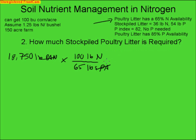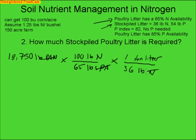That leaves us with the total amount of pounds of nitrogen we are going to need. We then multiply that by the ratio of pounds of N in the total amount of stockpiled litter — for every 1 ton of litter, we have 36 pounds of N. When you multiply that all together, you end up with 801 tons of poultry litter needed to supply all of our plant available nitrogen.